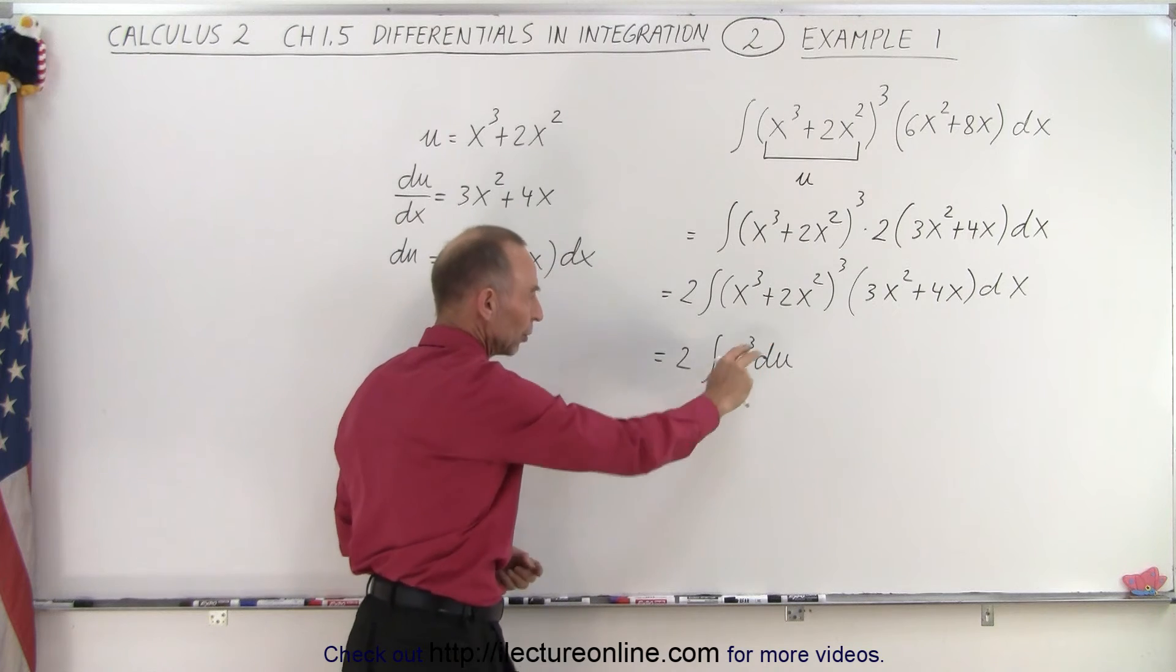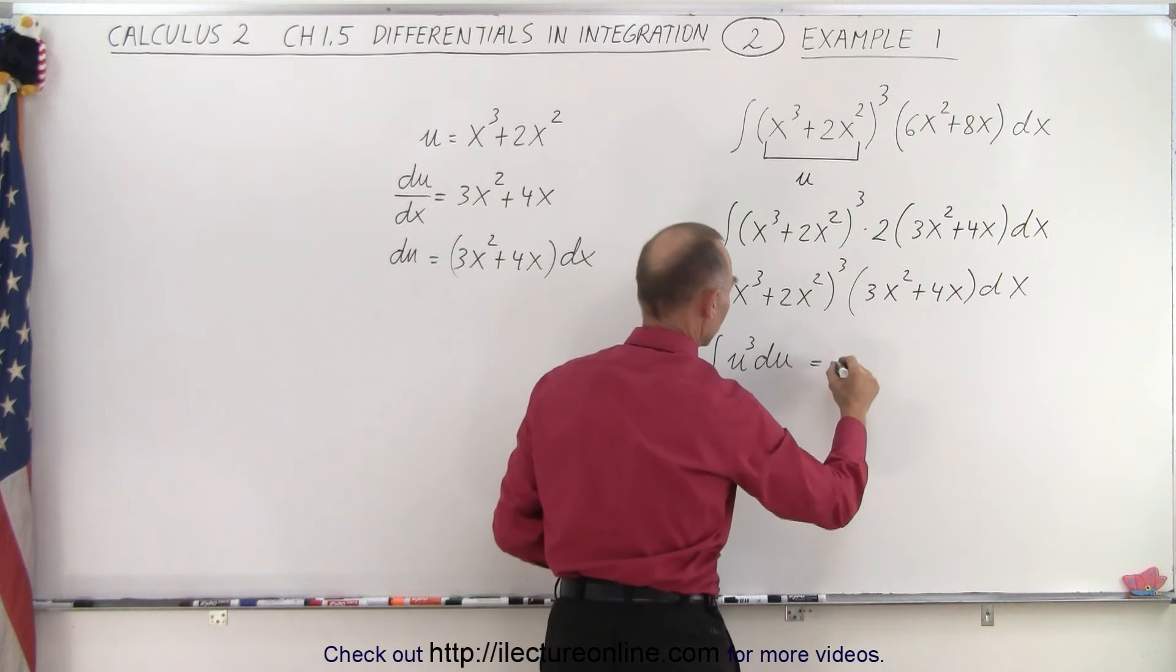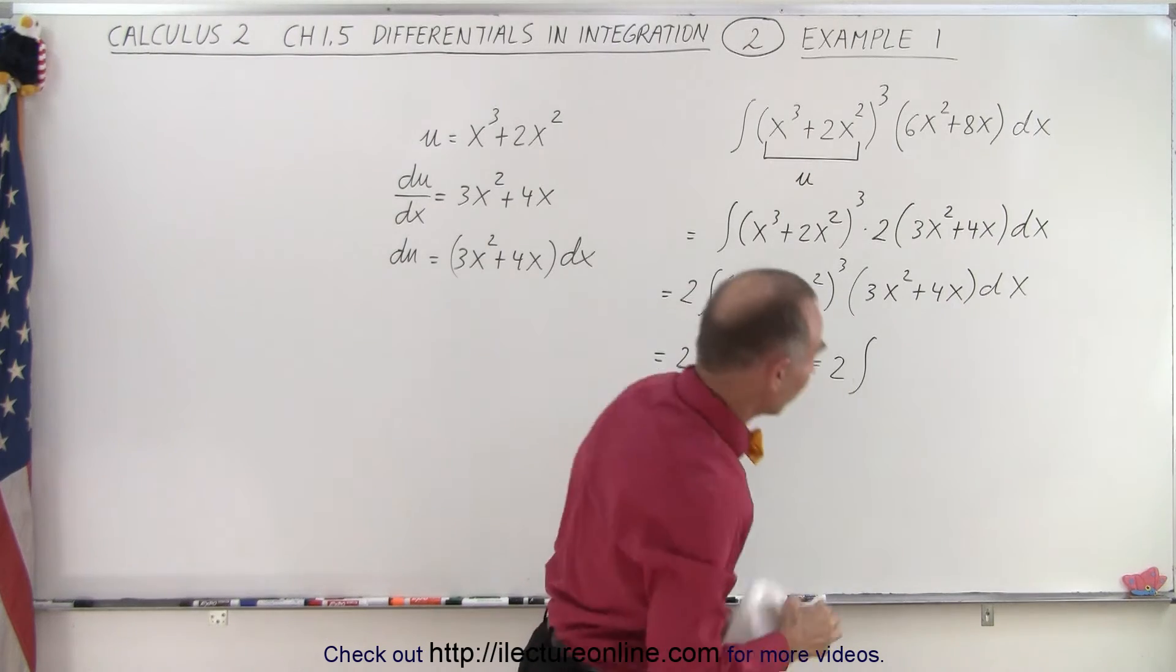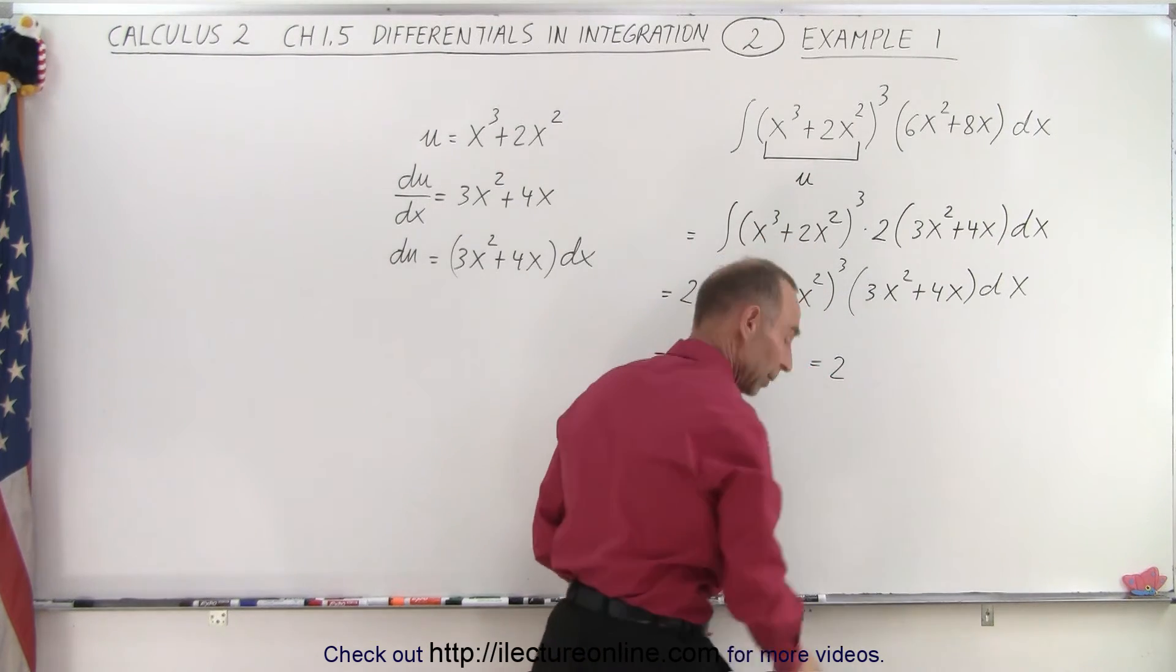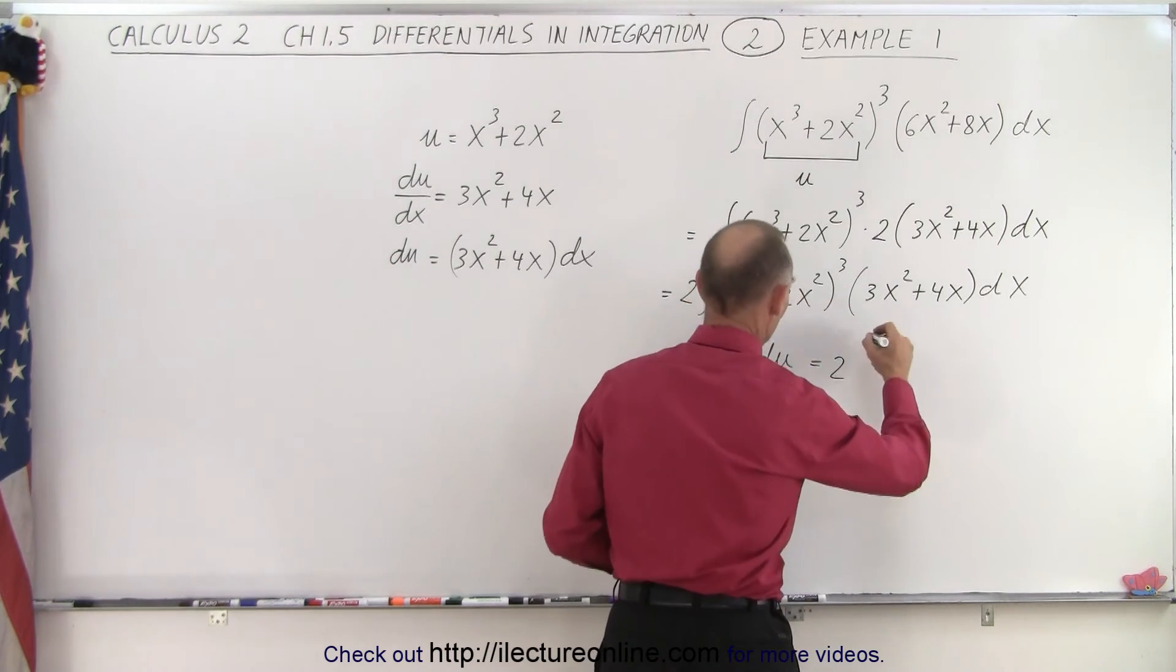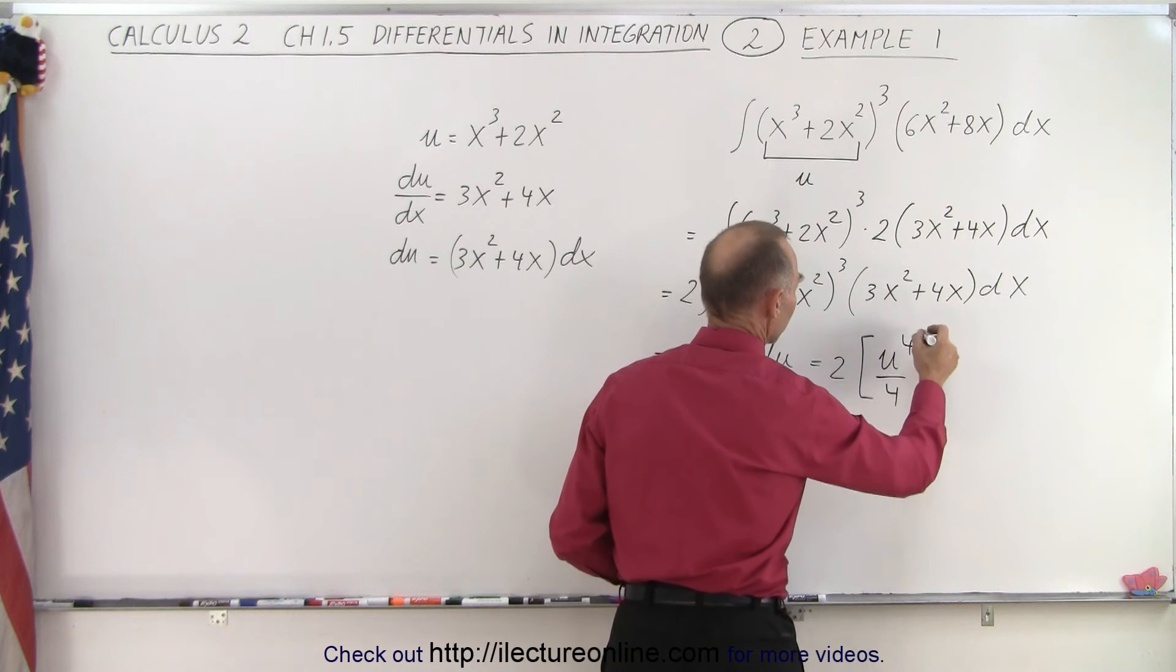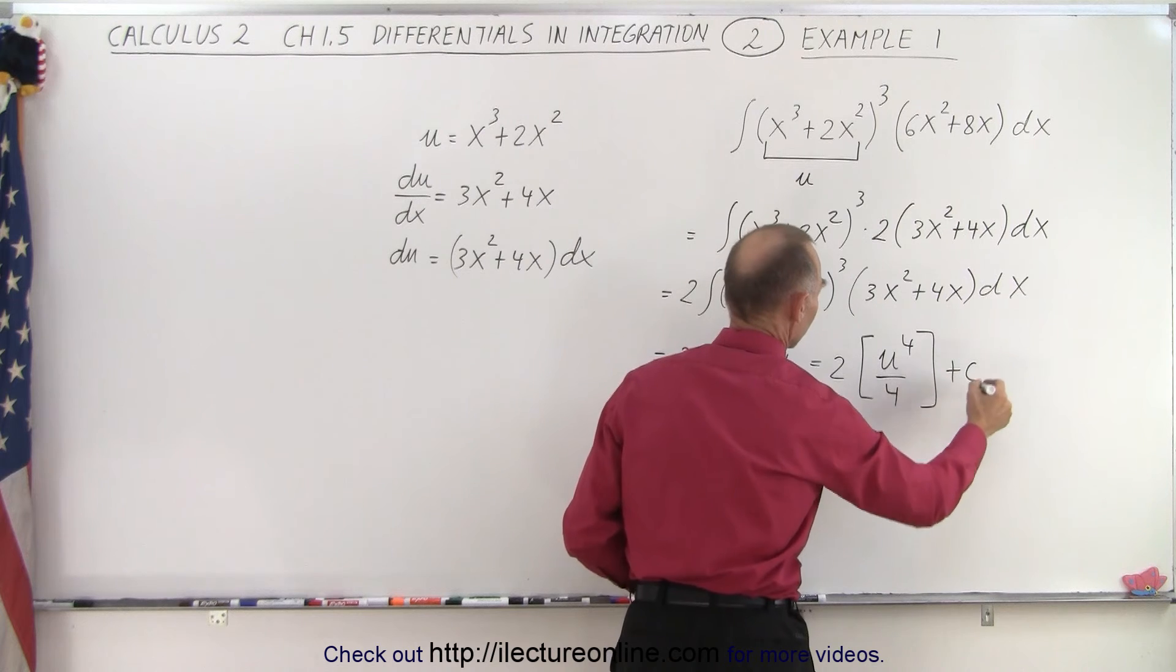So when I integrate, my du will drop out, and so this will be equal to 2 times the integral. Wait, no I'm integrating. The integral sign goes away. So it will be 2 times the quantity u⁴ divided by the new exponent 4 plus a constant of integration.